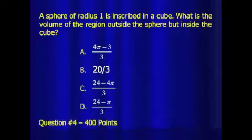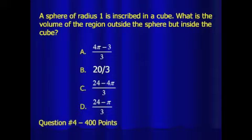A sphere of radius 1 is inscribed in a cube. What is the volume of the region outside the sphere but inside the cube? Is it (4π − 3) / 3? 20 thirds? (24 − 4π) / 3? Or (24 − π) / 3?